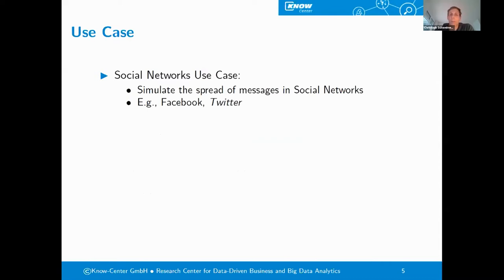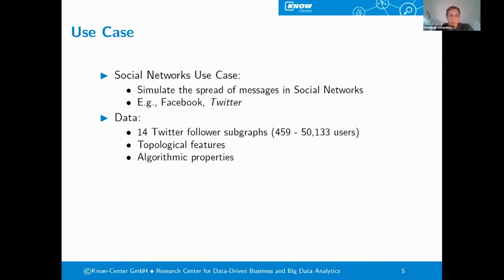One of these four global challenges was the so-called social networks use case, where the idea was to simulate how messages spread in social networks, for instance Facebook, Instagram, or Twitter. But ultimately, we then also put our focus on Twitter. We have gathered some data from Twitter by crawling 14 different follower subgraphs with sizes ranging from 500 to approximately 50,000 users.